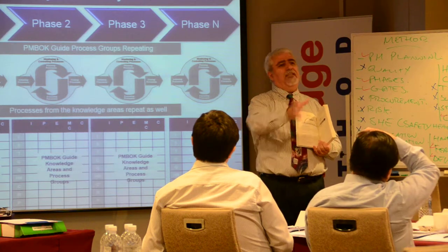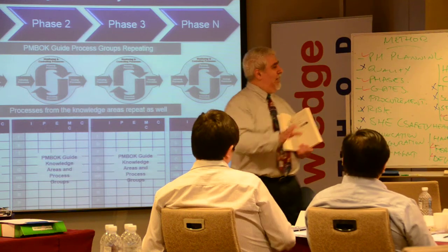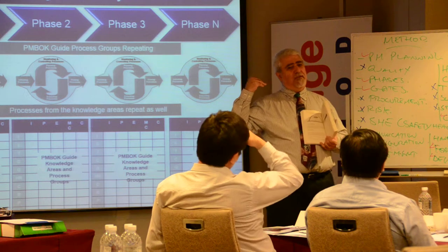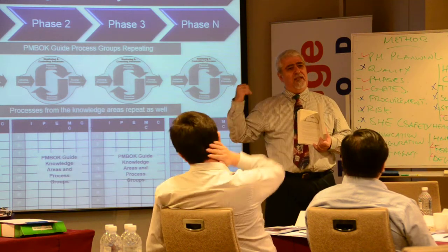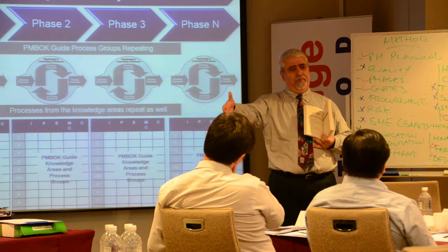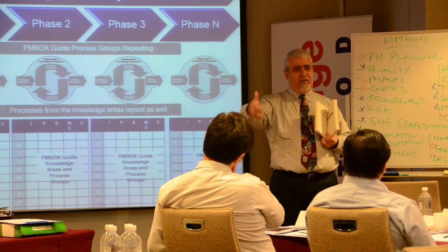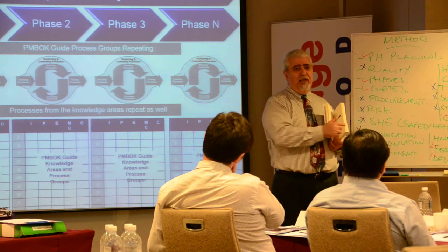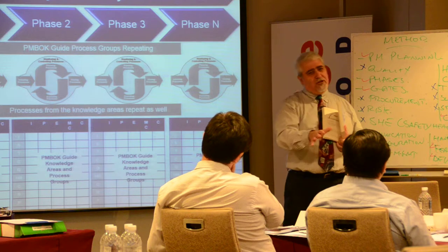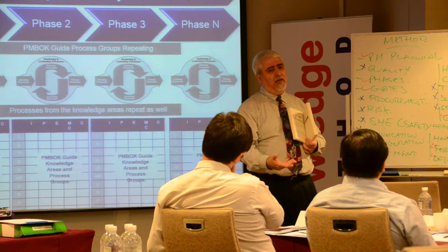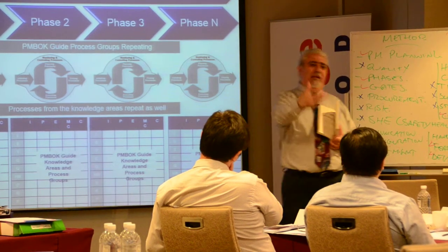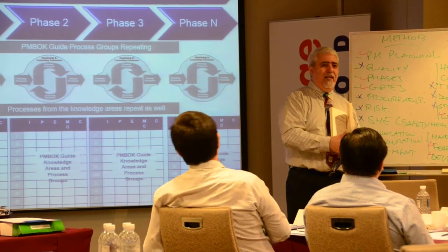Let's talk about scope management as an example. The PMBOK includes a scope management plan — it used to be there, they took it out, and then in the last edition they put it back in. So you need to plan how to manage scope, and there is a process for every knowledge area. These are management processes. Then in the scope area, you have to collect requirements, develop the WBS, and write the scope statement. This is detailed planning.